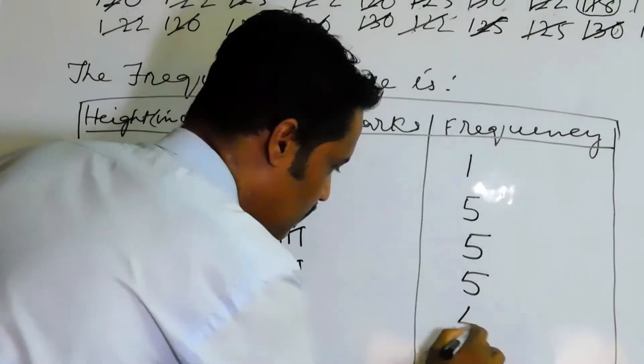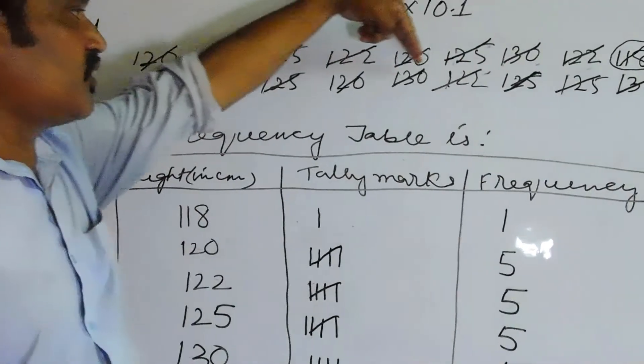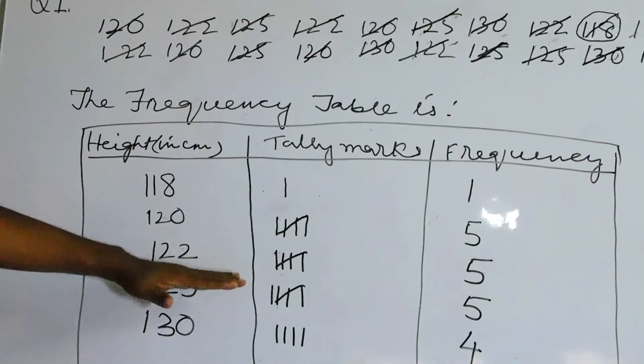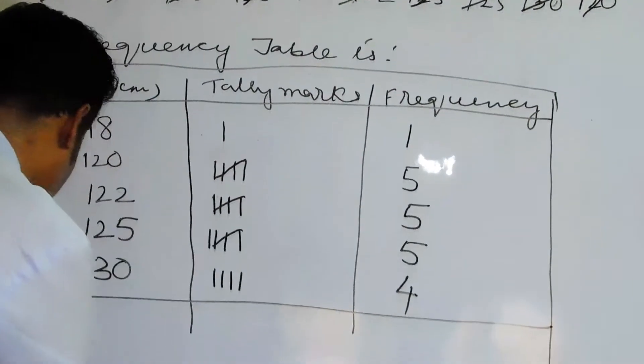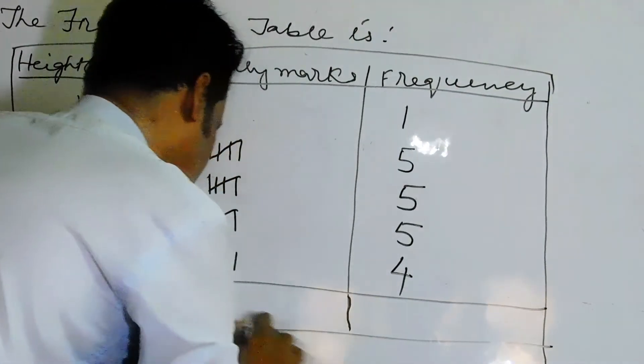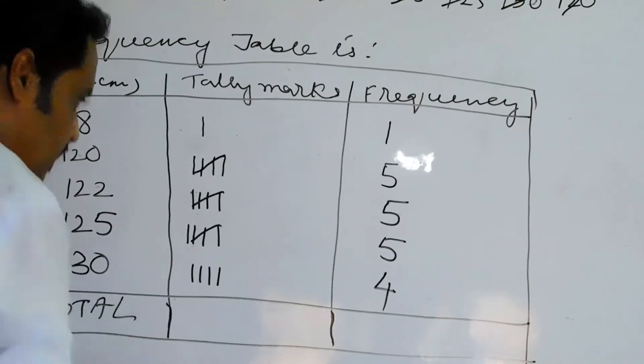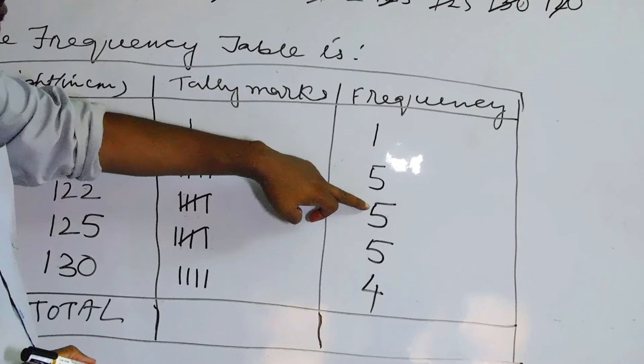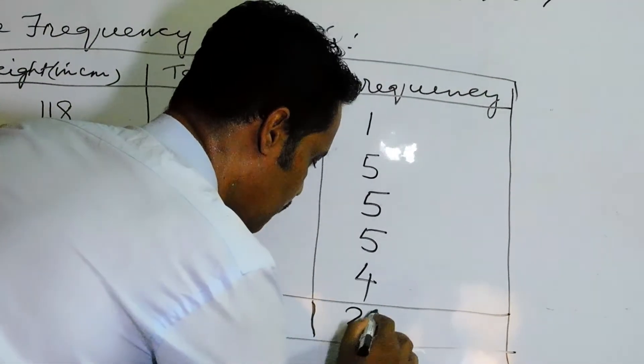Now after that you will have to total it. If in your total you get 20 as the answer that means the height of 20 people then the answer is correct. So total here you added one plus five is six, six plus five is eleven, eleven plus five is sixteen, sixteen plus four is twenty. So we are getting the correct answer.